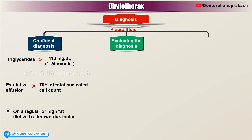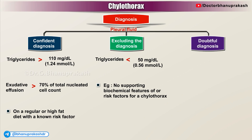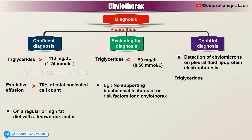Conversely, a pleural fluid triglyceride level of less than 50 mg per deciliter strongly excludes the diagnosis in the correct clinical context, for example, no supporting biochemical features of or risk factors for a chylothorax. When in doubt, the diagnosis should be achieved by the detection of chylomicrons on pleural fluid lipoprotein electrophoresis — for example, in those with a pleural fluid triglyceride level between 50 mg per deciliter and 110 mg per deciliter.